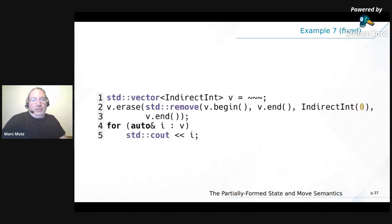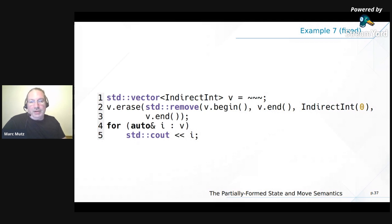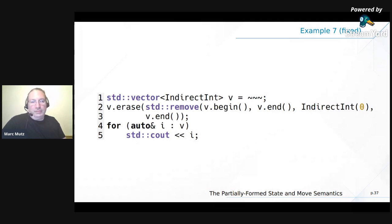How to fix this: already in C++98, you were supposed to use the erase-remove idiom. Don't depend on the return value of std::remove — pass it directly to vector::erase with the vector end as the second argument. That actually removes all scheduled items, and afterwards you can iterate over the whole vector because it only contains the elements you wanted to keep, not the garbage std::remove left at the end.